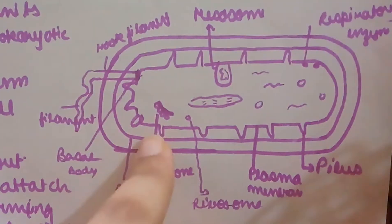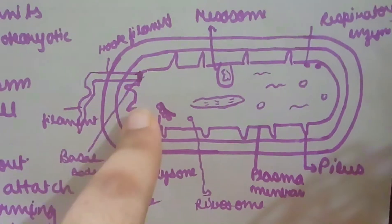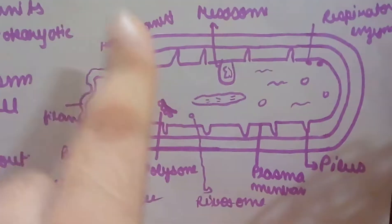Remember what polysomes are? When several ribosomes are attached to a single mRNA, they form polyribosomes or polysomes.